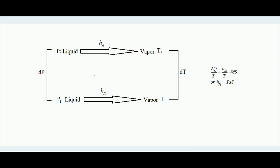We also know that entropy change dS equals dQ/T, where dQ is the heat addition and T is the temperature. Since phase change always happens at constant temperature, dQ here equals HFG. Therefore HFG/T equals dS, which means HFG equals T·dS. So to summarize: at pressure P1, saturation temperature is T1, and latent heat HFG converts liquid to vapor. At P2, saturation temperature is T2 with essentially the same latent heat, since the small pressure change doesn't significantly alter it.